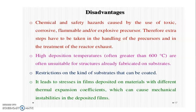Disadvantages of CVD: chemical and safety hazards caused by the use of toxic, corrosive, flammable, and explosive precursors; therefore, extra steps have to be taken in handling precursors and in the treatment of reactor exhaust. High deposition temperatures are often unsuitable for already-fabricated structures or substrates, restricting the kind of substrate that can be coated. It leads to stresses in films deposited on materials with a different thermal expansion coefficient, which can cause mechanical instabilities in the deposited films.